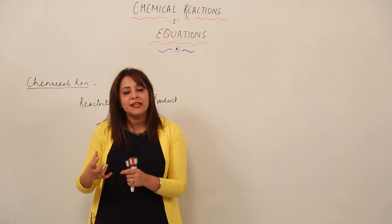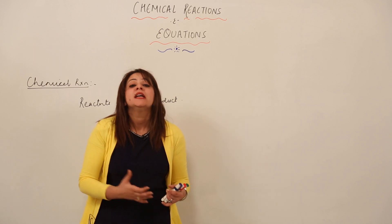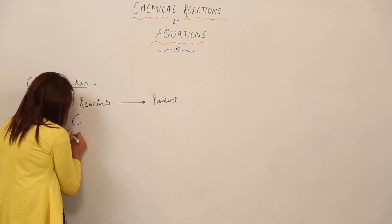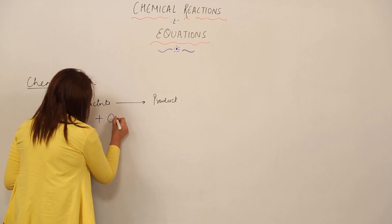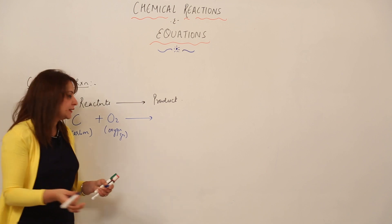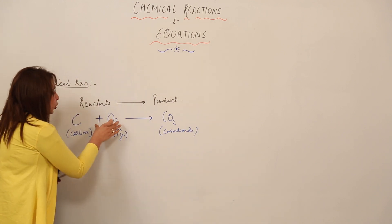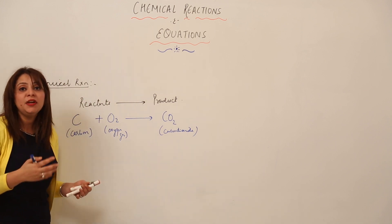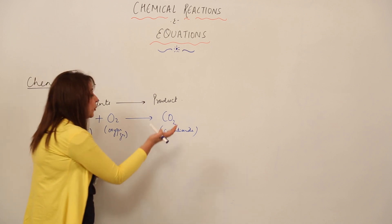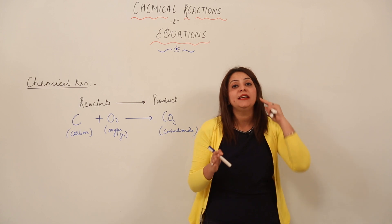When reactants undergo a chemical change, old bonds break and new bonds are formed, giving rise to a new substance called the product. For example, carbon (C) reacted with oxygen gas (O₂): C + O₂ → CO₂. Carbon and O₂ react to form carbon dioxide gas, and this is a chemical change because CO₂ cannot be split back into carbon and oxygen by physical methods.